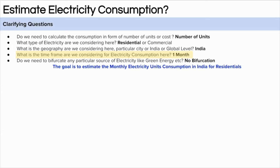Let's assume we are thinking about monthly unit consumption in India. The final question is about the type of electricity — whether we need to bifurcate between green energy or similar. Let's assume we are not bifurcating and are only thinking about normal electricity consumption. I think we have asked a considerable set of questions. If you think we could have asked more, please let me know in the comment section.